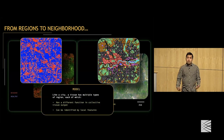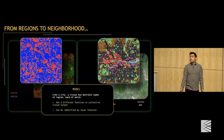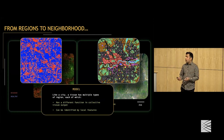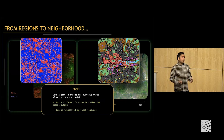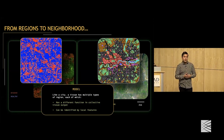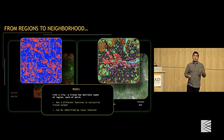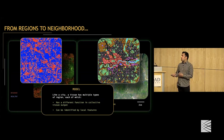Our model for looking at a tissue, informed by this analogy, was: like a city, a tissue would have multiple types of region, each with a different function in the collective tissue output. Just like in a city you can identify neighborhoods based on local features — the business district by the presence of shops, the residential area by houses — you'd be able to identify similar types of regions in tissues by local features.